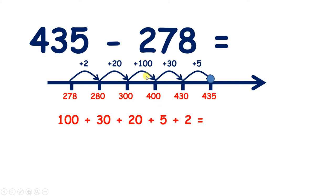So we added 100, 30, 20, 5, and 2. So 30 plus 20 is 50, and 5 plus 2 is 7. So altogether we added 157. So 435 minus 278 equals 157.